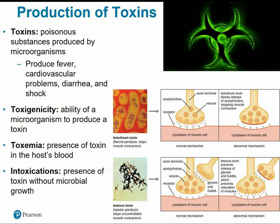Toxins may produce symptoms like fever, cardiovascular problems, digestive problems like diarrhea, and can physically destroy cells and cause the body to go into shock. Toxigenicity is the ability of a microbe to produce a toxin. Toxemia is the presence of toxin in the host's blood. Intoxication is the presence of a toxin without microbial growth — the toxin is there, but the actual microbe that produced it is no longer present.